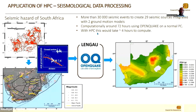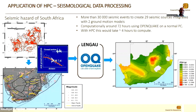We also do seismological data interpretation. The maps show the location of events used to compute a model of where possible earthquakes can happen. Earthquakes are normally associated with structure, so we identify zones where these events occur and combine that with a ground motion model. We have over 3,000 events that we integrate with 28 seismic sources combined with the ground motion model. On an ordinary PC this would run for at least 72 hours, but with an HPC it takes under four hours.